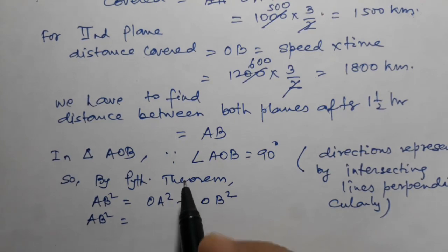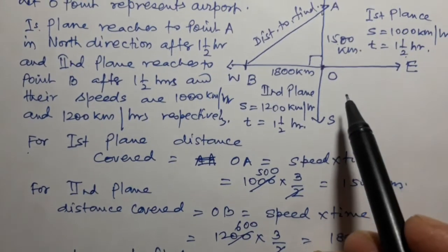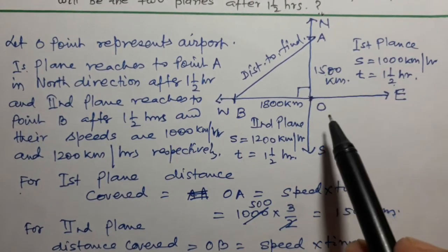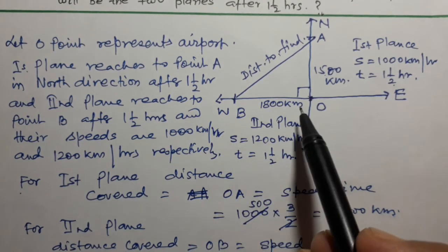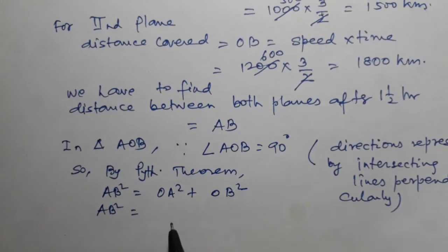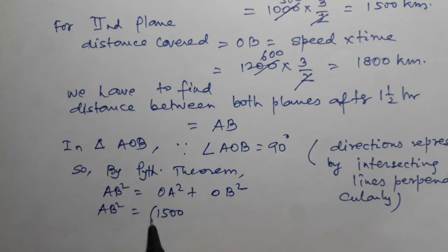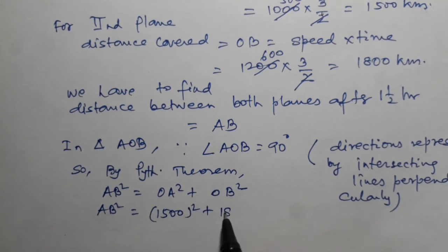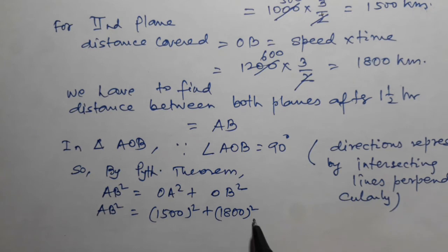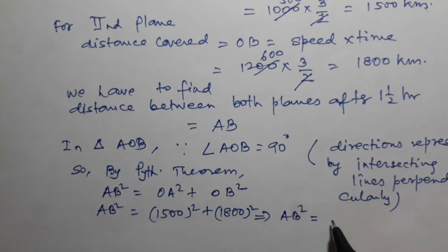AB is the hypotenuse because the angle is 90 degrees — the perpendicular is OA = 1500 km and the base is OB = 1800 km. So AB² = OA² + OB² = 1500² + 1800².